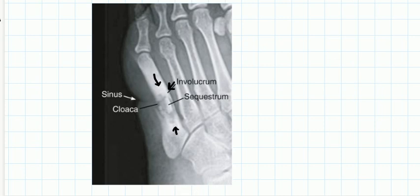This increased density — the new bone formation all around — is what you call the involucrum. You can also see a breach in the bone here; this is what you call the cloaca, through which the granulation tissue will move out. Looking at the soft tissue shadow, you can see there is a breach in the soft tissue as well — this is a sinus opening on the skin.